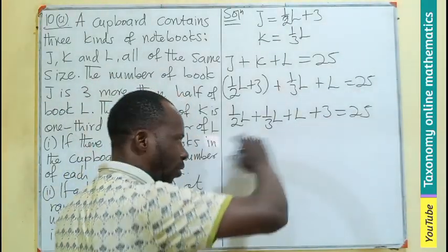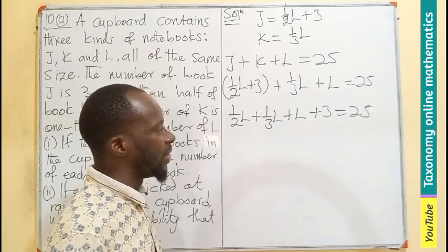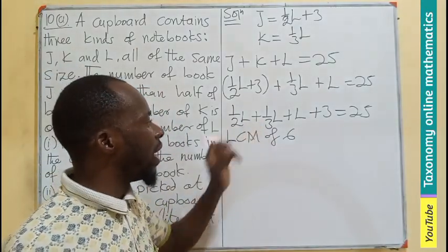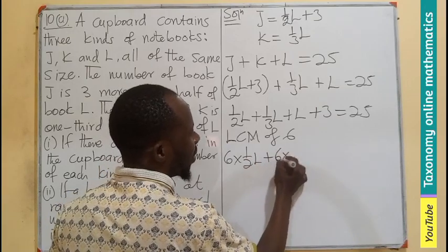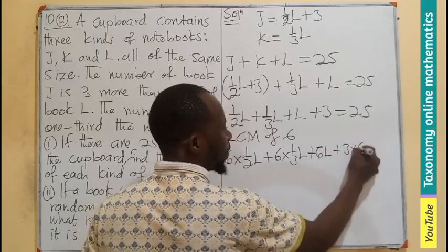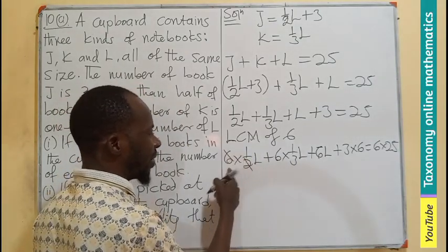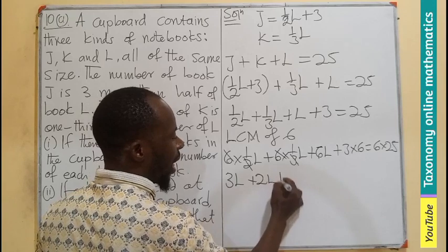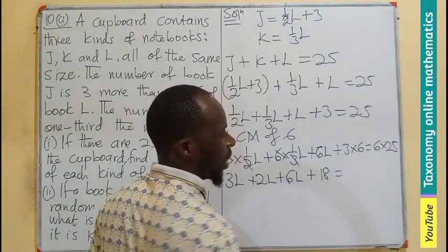Multiplying through by 6: six times one-half L gives 3L; six times one-third L gives 2L; six times L gives 6L; six times three gives 18; and six times 25 gives 150. So we have 3L plus 2L plus 6L plus 18 equals 150.